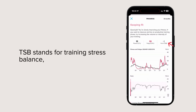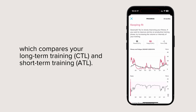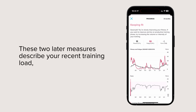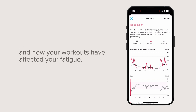TSB stands for Training Stress Balance, which compares your Long-Term Training, CTL, and Short-Term Training, ATL. These two measures describe your recent training load and how your workouts have affected your fatigue.